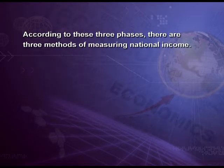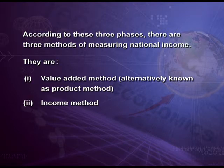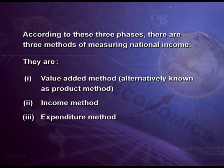According to these three phases, there are three methods of measuring national income: the value added method, also known as product method, income method and expenditure method. Let us discuss first the value added method.